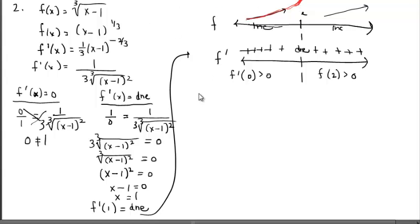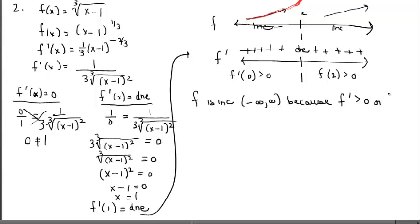Back to the question. F is increasing on all real numbers, because f prime is positive — or f prime does not exist at that one x value. In most cases except for one x value, the slope is always positive. But there is one time at x equals one where the slope did not exist, which means it's a vertical tangent. The function can still increase through that vertical tangent. The function never decreases, so you don't have to say anything about decreasing. Do we have any mins or maxes? Look at the f prime number line — do the slopes ever change signs? No. So no relative extrema.